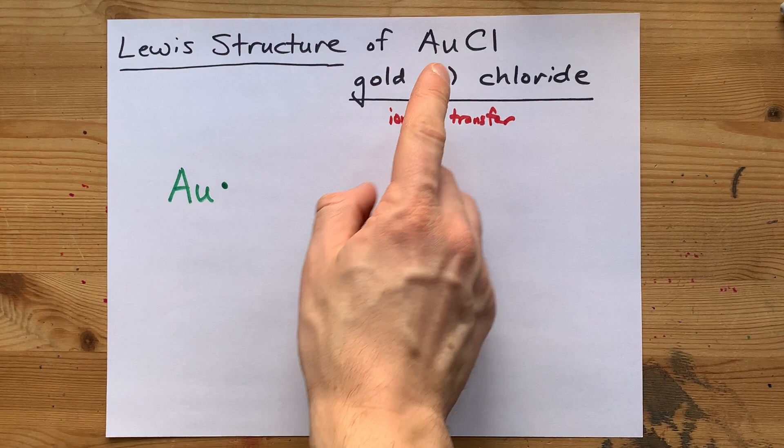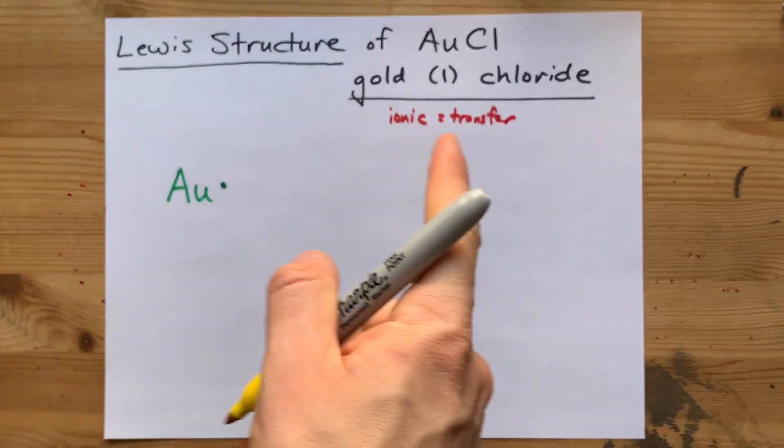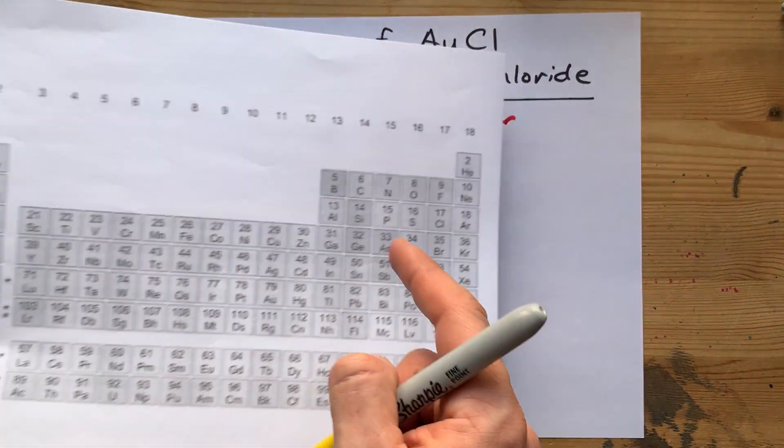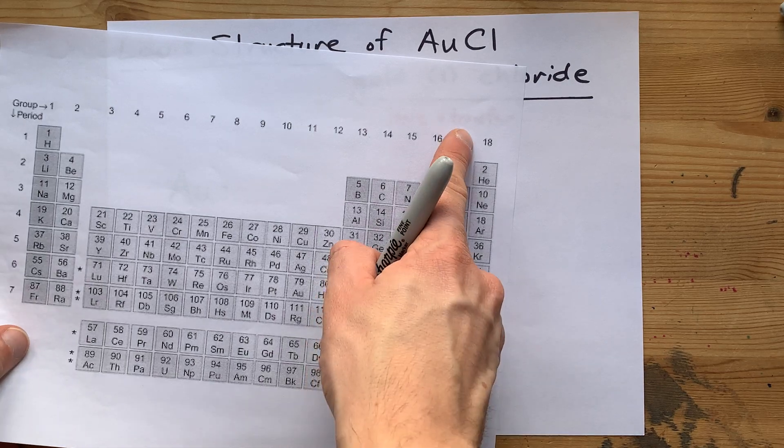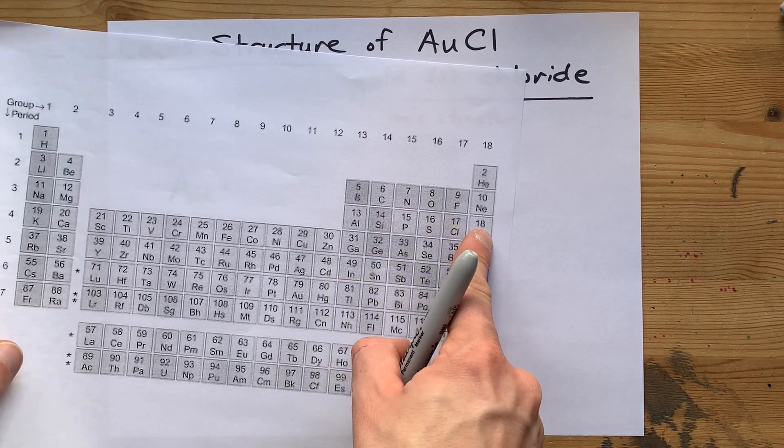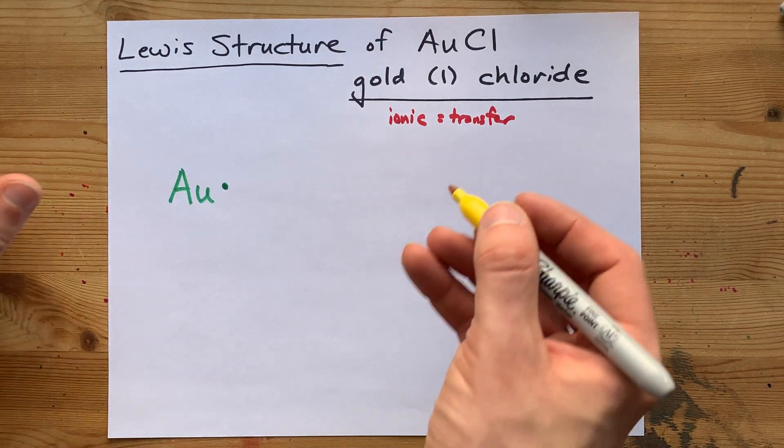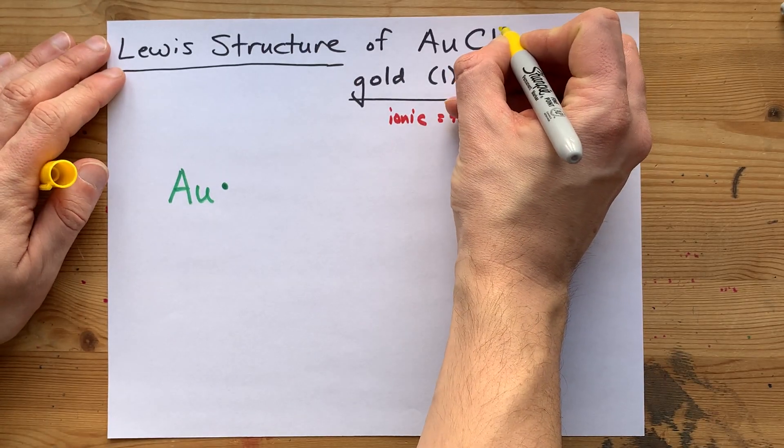That one is also written here. If you know that the charge that chlorine wants, group 17, these want to gain one valence electron. If you know that the charge chlorine wants is minus one,